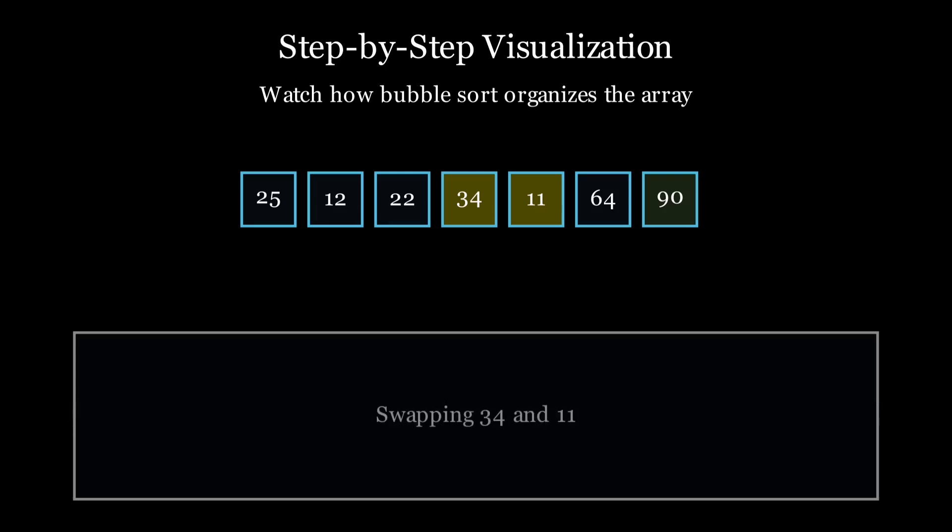So in the second pass, the second largest element will be bubbled up, that is 64. And in the third pass, the element 34 occupies its correct position. And 25 in the next one, 22, 12, and 11.